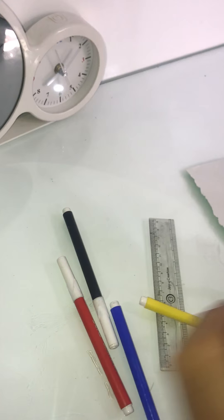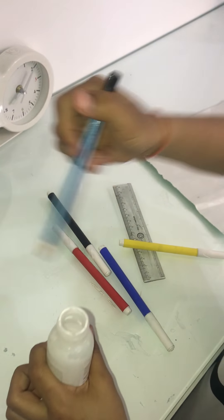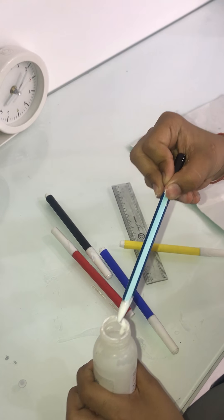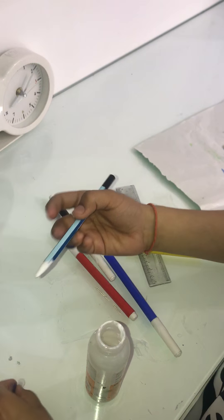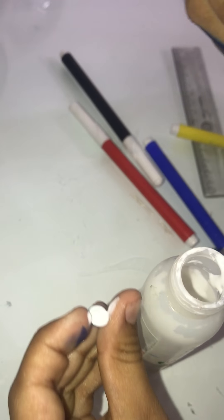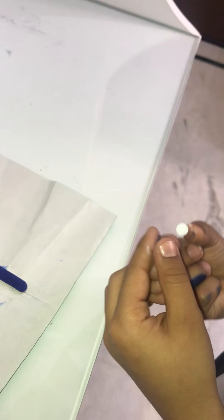Step 4. We have to paste a wobbly eye. Oh, I have forgotten to put some glue. Oh, I have taken so much. Now we have to paste it like this.